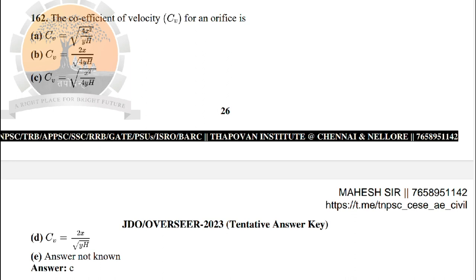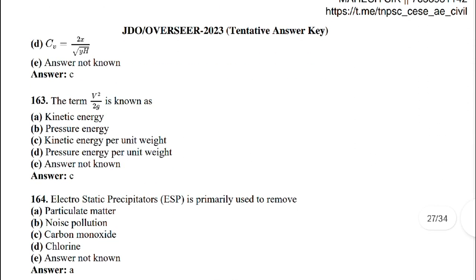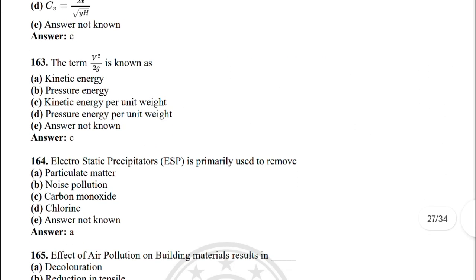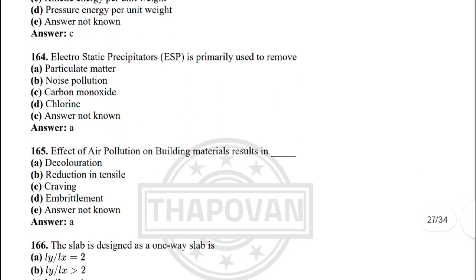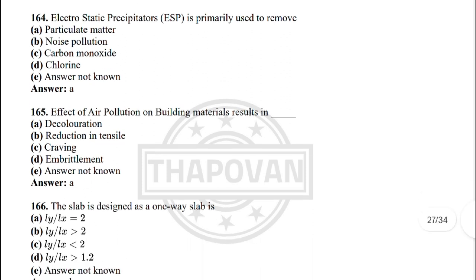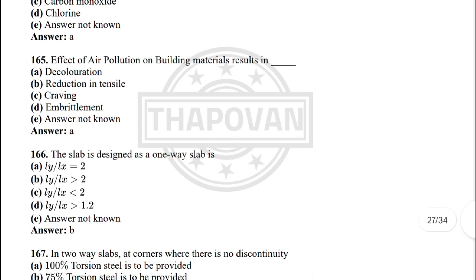Next: the term V²/2g is known as — the correct answer is option C: kinetic energy per unit weight. Next: electrostatic precipitators are primarily used to remove — the correct answer is option A: particulate matter.